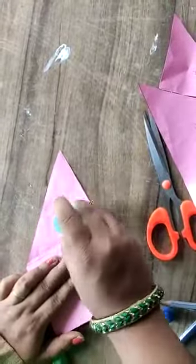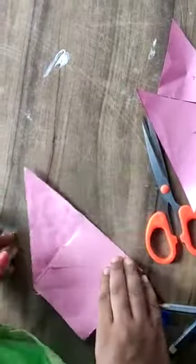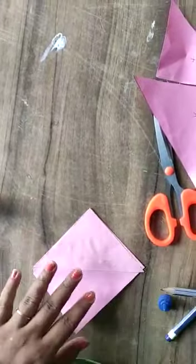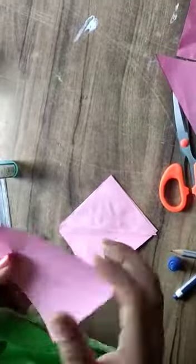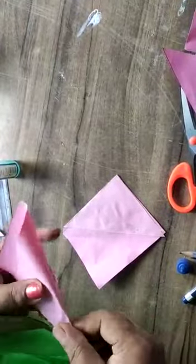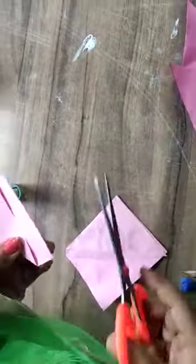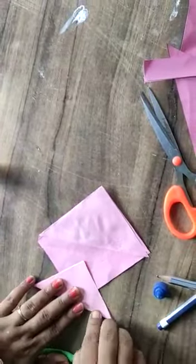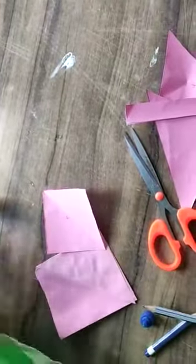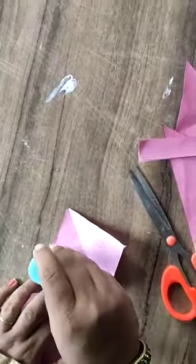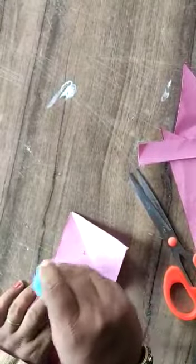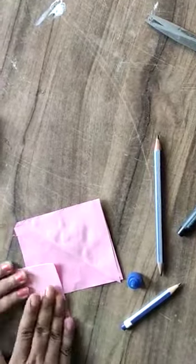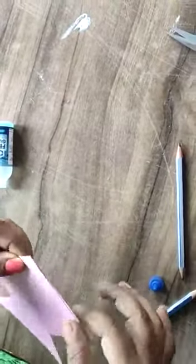Glue. Spread it, then paste it. And now we will use this paper. First, we will save it and attach it from the back. So, the structure is ready.